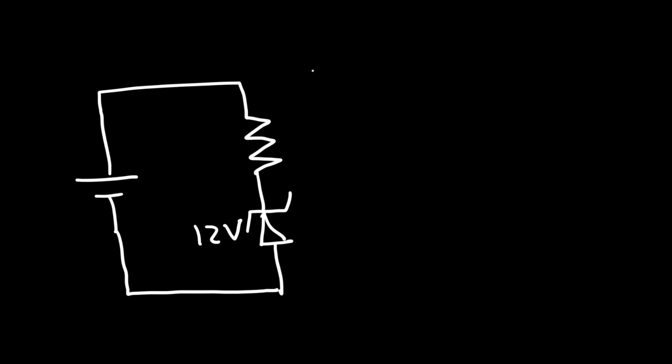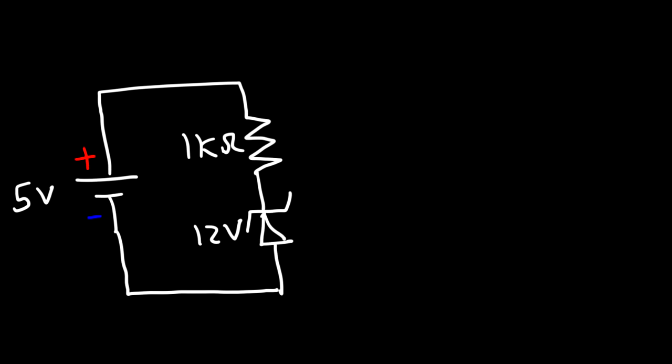Let's say the rating of the Zener diode is 12 volts and we have a 1 kilohm resistor. Now what's going to happen if the battery is a 5 volt battery? What is the current in this circuit — is it on or is it off? Because the input voltage of the circuit is less than the reverse breakdown voltage of the Zener diode, no current will flow. So the circuit is off and the current flowing through this resistor is 0 amps.